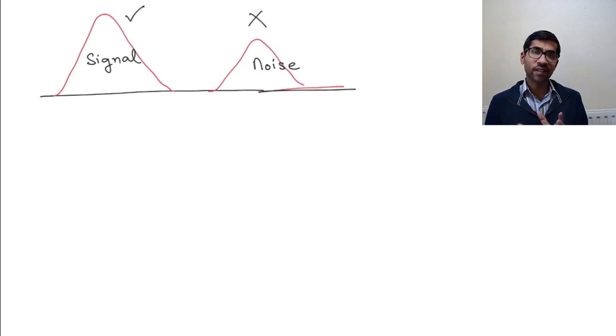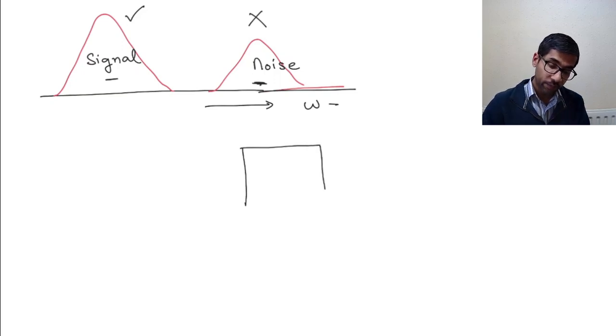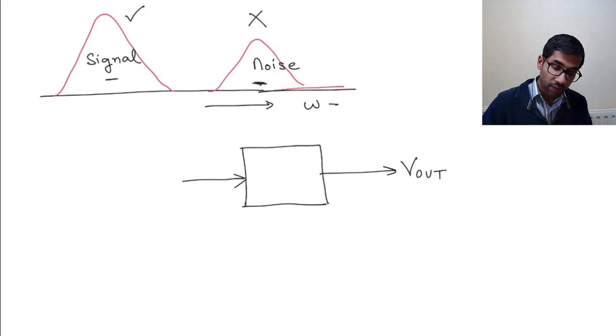Now how is the system going to do this kind of a thing? So of course one of the things that we noted was this is at a different frequency, so this axis is omega. The noise is at a different frequency compared to the signal and we could use this property and build a circuit, a circuit which takes an input and which gives an output.